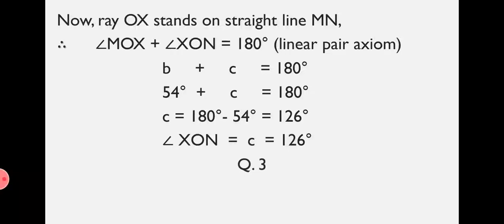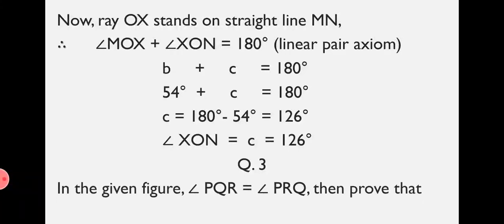Next, Question number 3. In the given figure, Angle PQR equals Angle PRQ. Then prove that Angle PQS equals Angle PRT. This is a question which we have to prove, so we write Given, To Prove, and Proof separately. Wherever you have to find angle measurements, you don't need to write Given and Prove. But wherever you have to prove a statement, we write Given and To Prove with Proof.